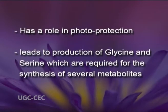Photorespiration may be used as a mechanism to dissipate excess energy at higher irradiance levels. Along with other non-photosynthetic thermal dissipation methods, plants can use photorespiration as a method of photoprotection. Photorespiration also leads to production of glycine and serine, which are required for the synthesis of several metabolites. With this module, we finish dark reactions of photosynthesis and the related adaptations in plants to make these reactions more efficient. In the next module, we will discuss factors which influence the rate of photosynthesis and experimental methods to measure photosynthetic rates.